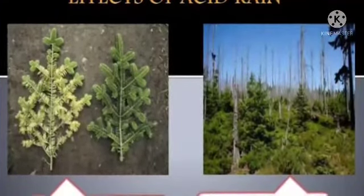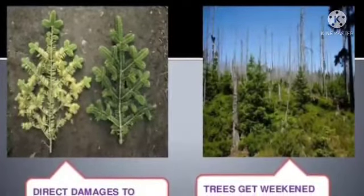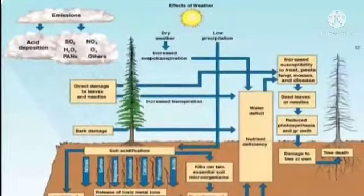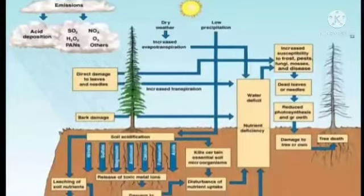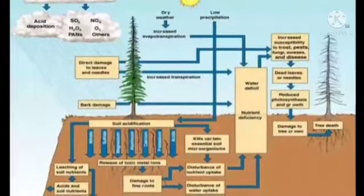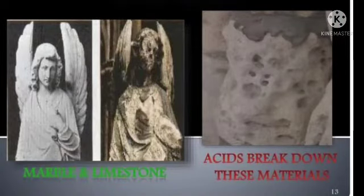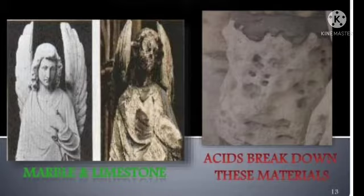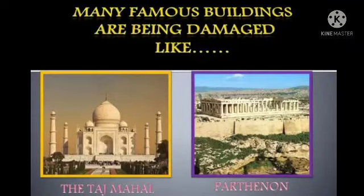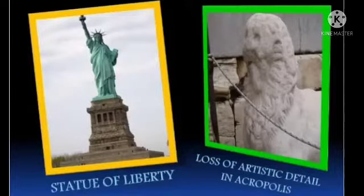Here are pictures showing the effects of acid rain, including its cultural effects. Many famous buildings are being damaged because of acid rain, such as the Taj Mahal, the Parthenon, the Statue of Liberty, and the Acropolis, which is suffering loss of artistic detail.